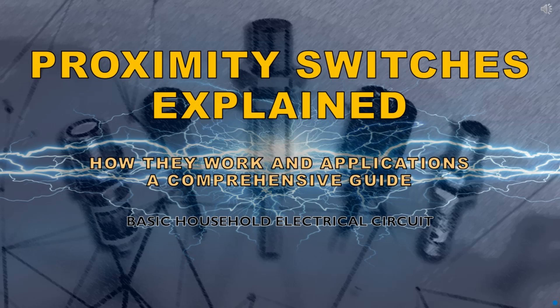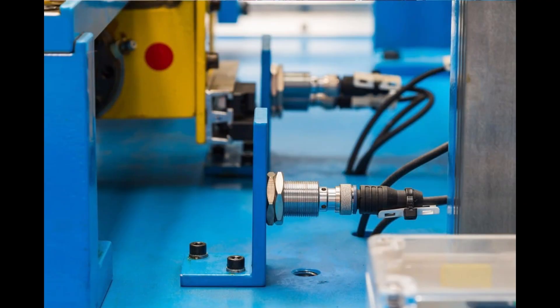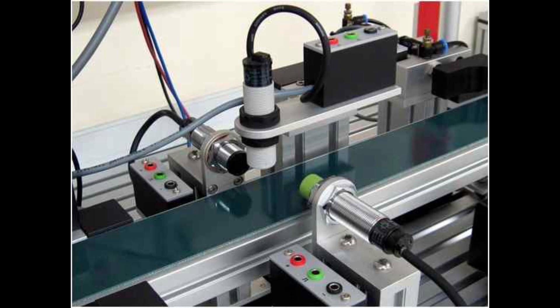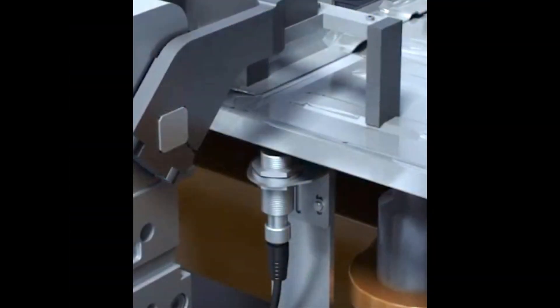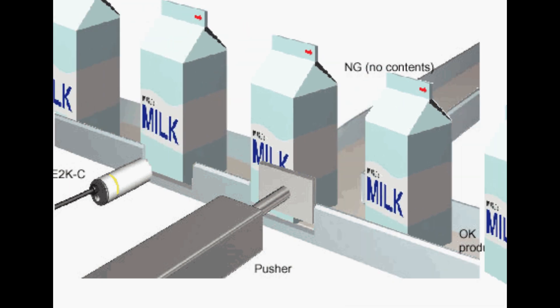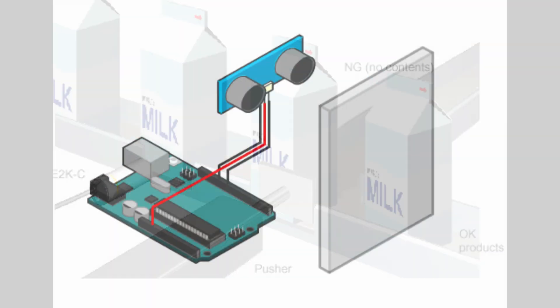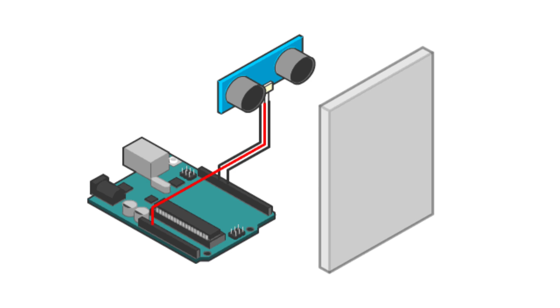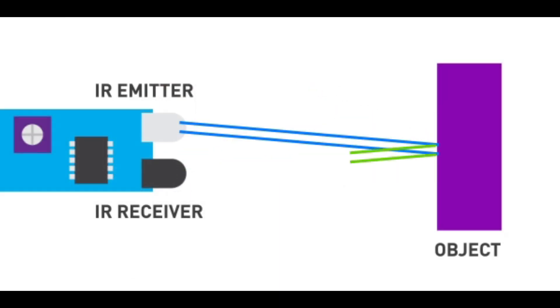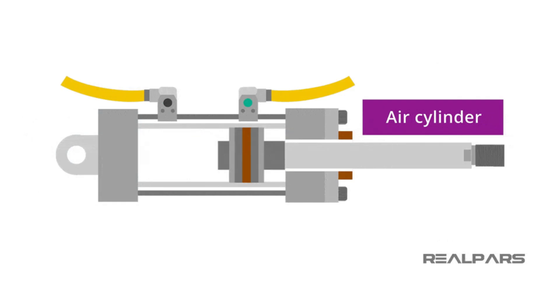Proximity switches explained: how they work and applications — a comprehensive guide. Welcome to our channel. Today we're diving into the world of proximity switches, these essential devices widely used in industrial and automation applications. A proximity switch is a sensor that detects the presence of an object without physical contact, using electromagnetic fields or light to sense objects, known for their reliability and long life.